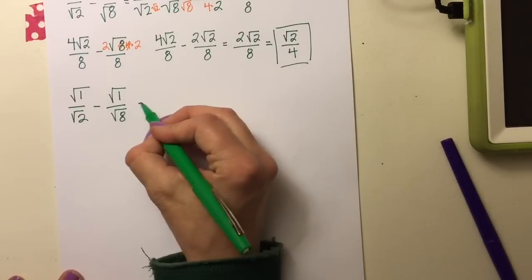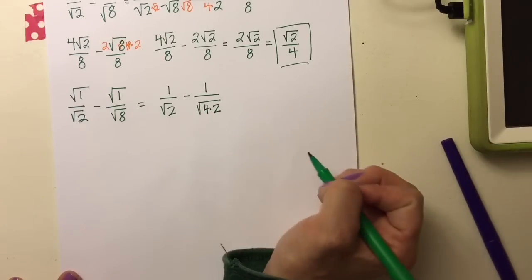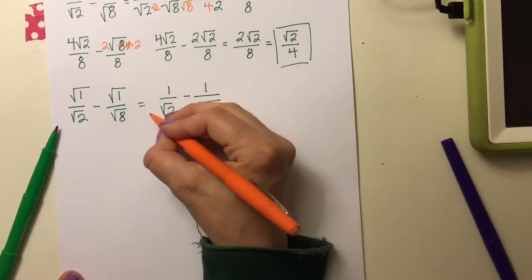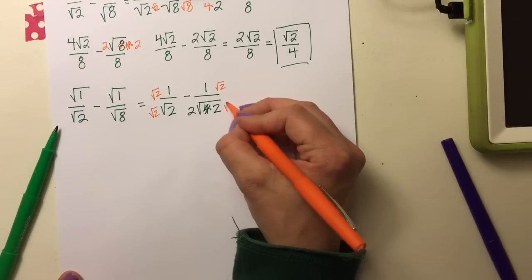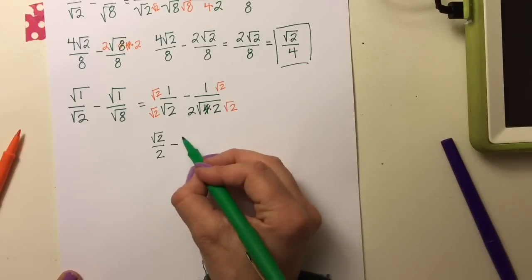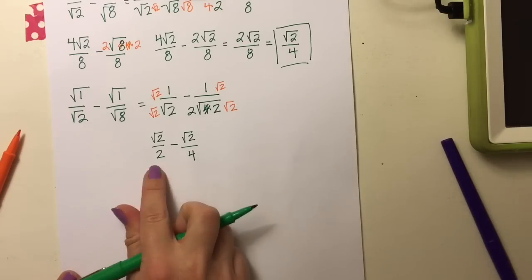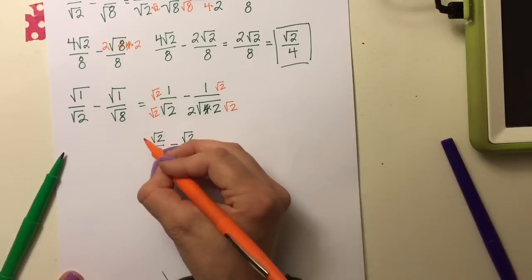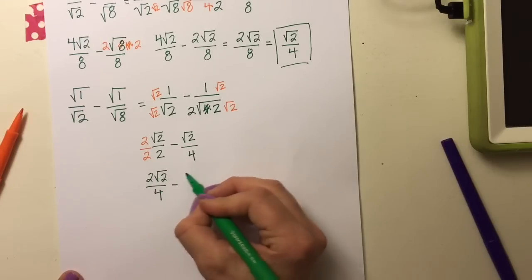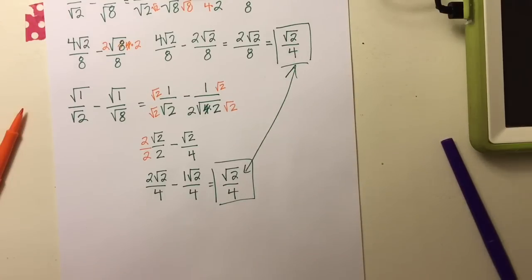Let me show the alternate approach, starting back at √1/√2 minus √1/√8, which is 1/√2 minus 1/√8. You might recognize that √8 = √(4×2), and √4 = 2, so it becomes 1/√2 minus 1/(2√2). Now both have √2 in the denominator. Rationalizing: √2/2 minus √2/4. These have the same radicand but different denominators, so multiply the first by 2 to get 2√2/4 minus √2/4 = √2/4 — exactly the same answer.